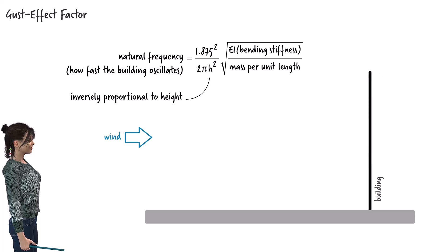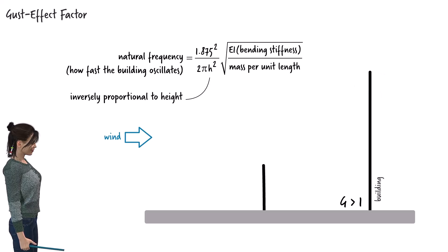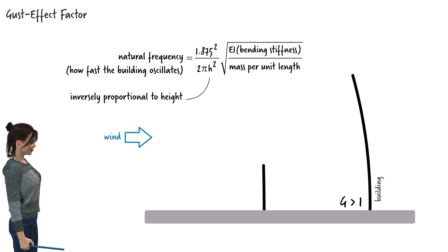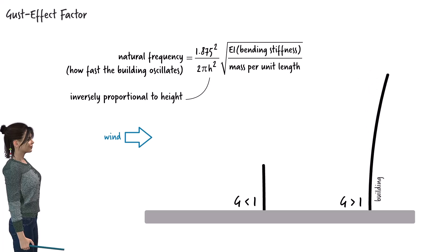For tall buildings, gusts can align with the building's motion, causing dynamic amplification — that's why G is greater than 1 for such structures. In contrast, a shorter building has a higher natural frequency and vibrates more quickly. This faster vibration tends to be out of sync with wind gusts, making the gust effect negligible for short, rigid structures. Keep in mind that ASCE 7 defines wind speed as a 3-second gust, not as an average wind, meaning the gustiness is already built into the velocity pressure. So for short, rigid buildings, we use a gust effect factor of less than 1.